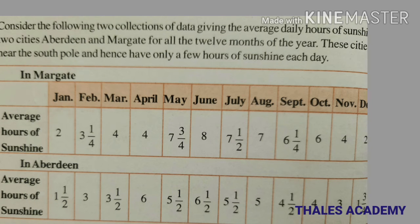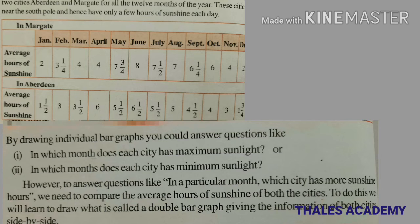Consider the following two collections of data giving the average daily hours of sunshine in two cities: Aberdeen and Margate. These cities are near the south pole and hence have only a few hours of sunshine each day. By drawing individual bar graphs, you could answer questions like in which month does each city have maximum sunlight or minimum sunlight.